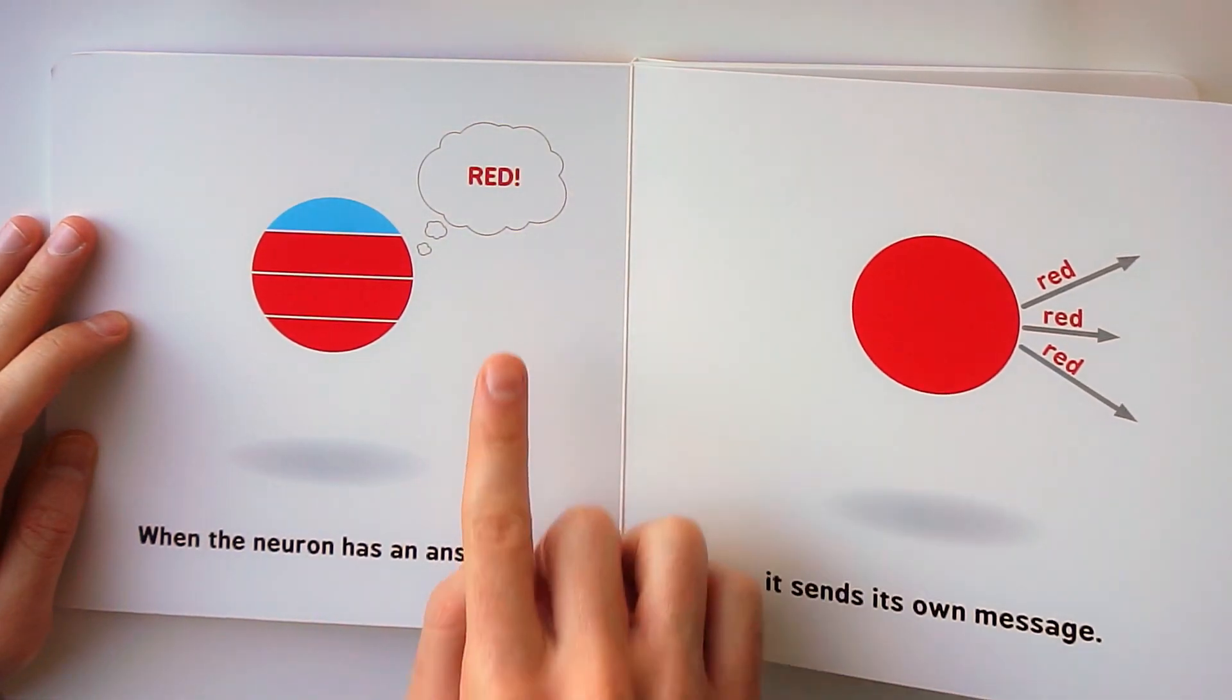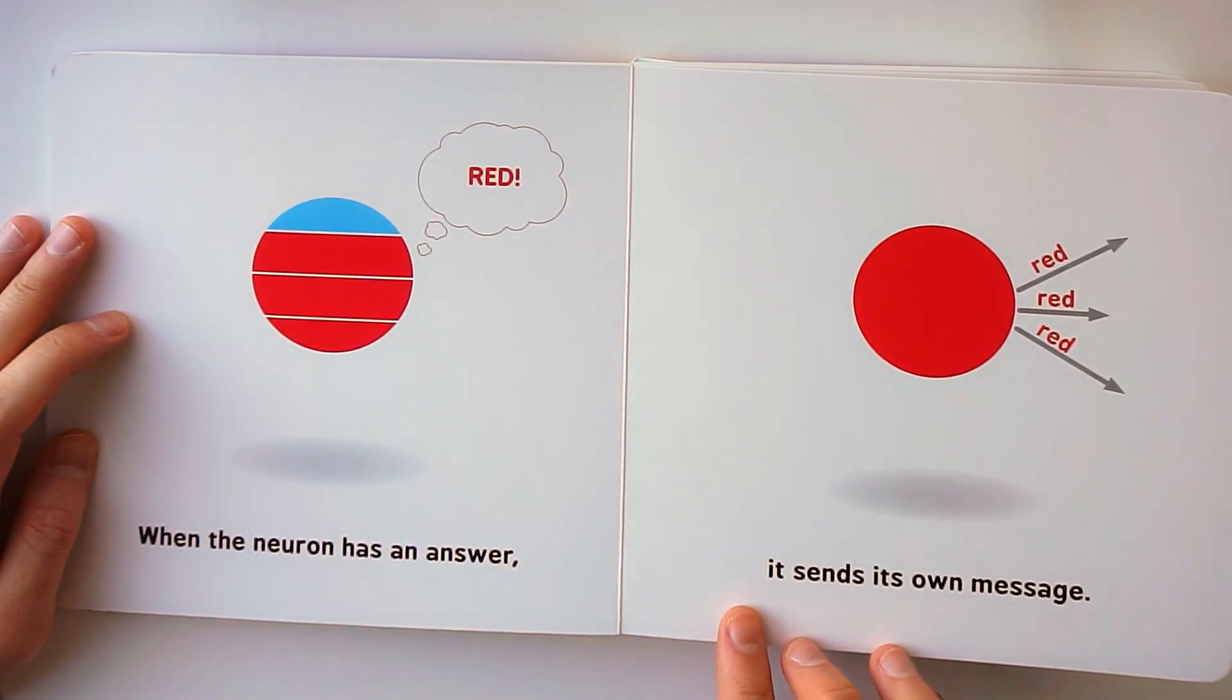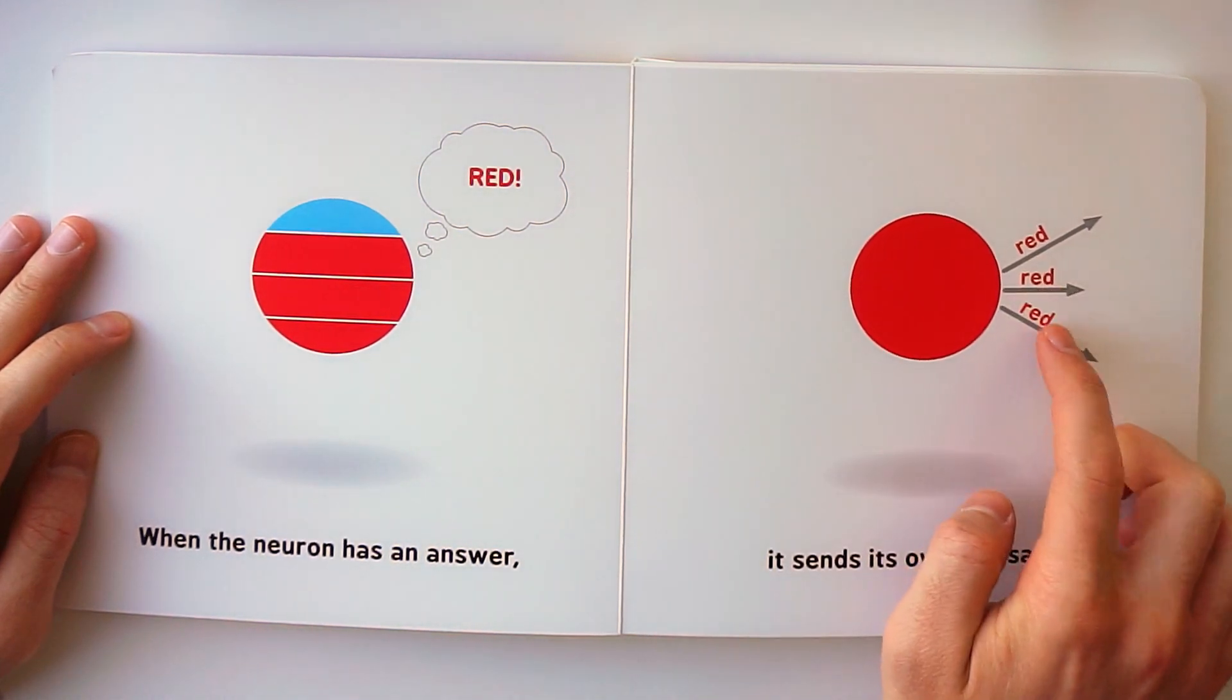When the neuron has an answer, red, it sends its own message, red.